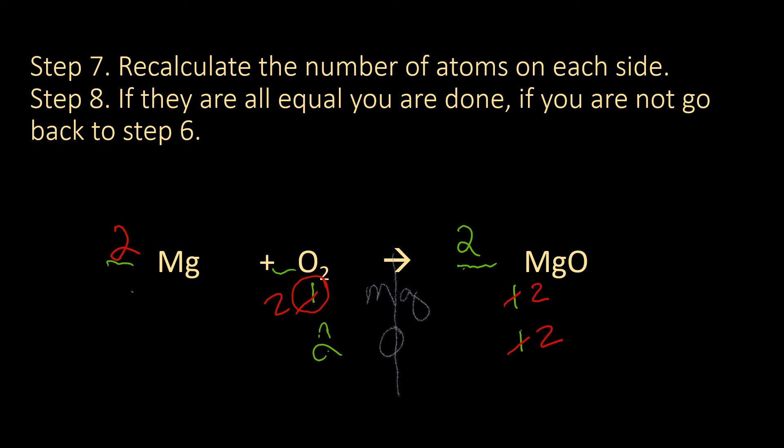If you're done, if it's still not balanced, go back to step six, readjust, recalculate whatever's not right, and do it again. Most of the ones we'll do in the scope of this class, you won't have to go back and forth more than probably three times.